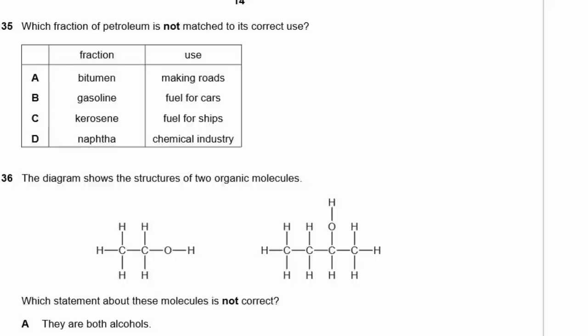Question 35. Which fraction of petroleum is NOT matched to its correct use? Bitumen is used for making roads — true. Gasoline is a fuel for cars — true. Kerosene is a fuel for ships — no, kerosene is a jet fuel and used for cooking and lighting, not ships. Naphtha is used in the chemical industry — true. So C — kerosene matched to ships — is incorrect. The answer is C.